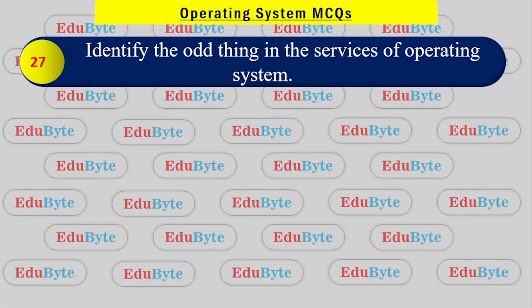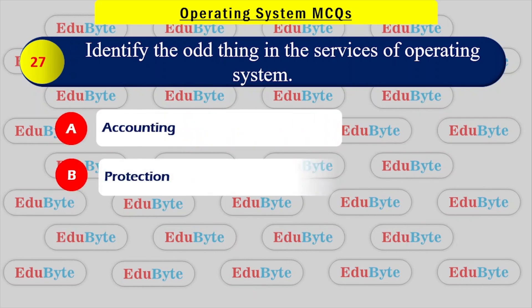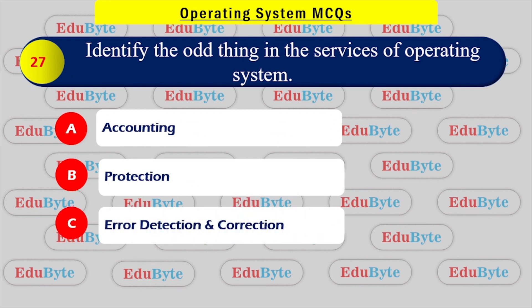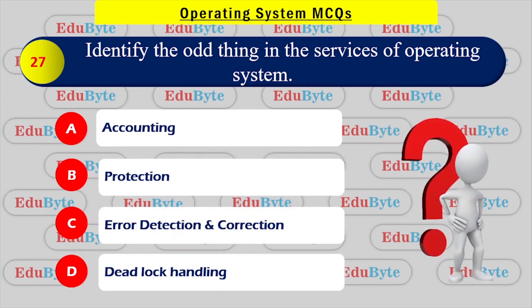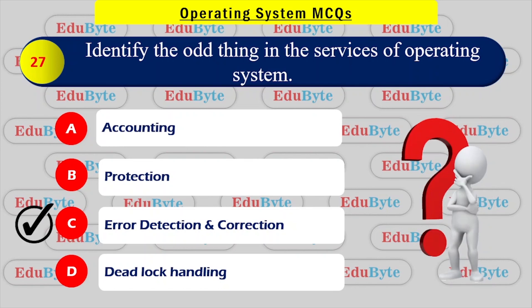Identify the odd one out in the services of an operating system. Options: accounting, protection, error detection and correction, error location. The correct answer is error detection and correction — this is the odd one out among the listed OS services.